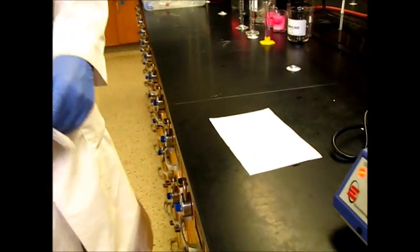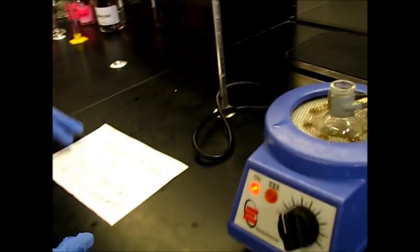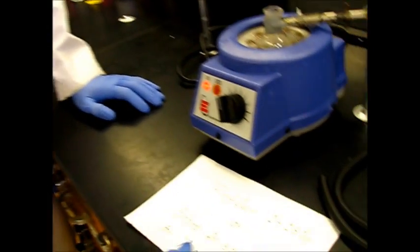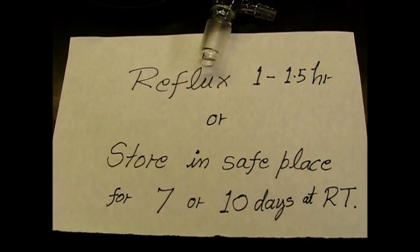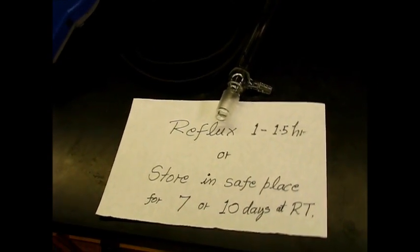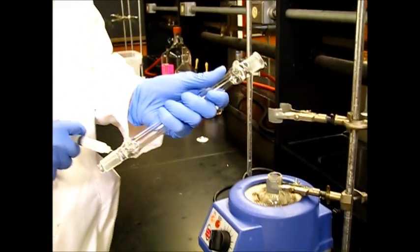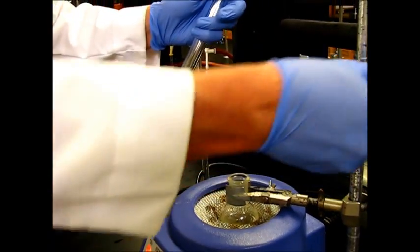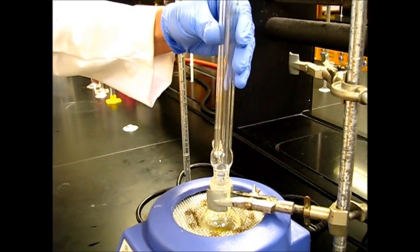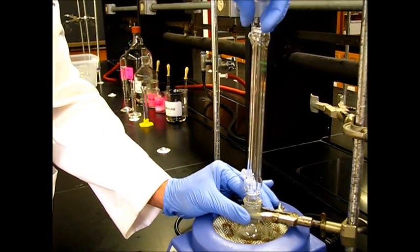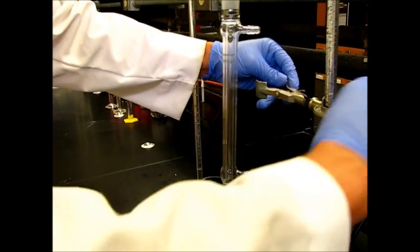So we do this reflux. Refluxing is basically a way to speed up a reaction. You could combine all these reagents together and just leave them sitting for a very long time. They would eventually react. But if you reflux and you add heat, that speeds up that time that would be required. So you could either reflux for an hour to an hour and a half. Or the way we normally do it is we put it all together and then over spring break it will just sit. And then once we come back, it'll be ready for the workup part. But since we're doing it all in one day, we're just going to go ahead and reflux.